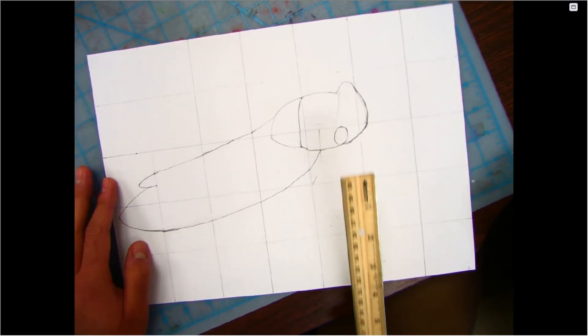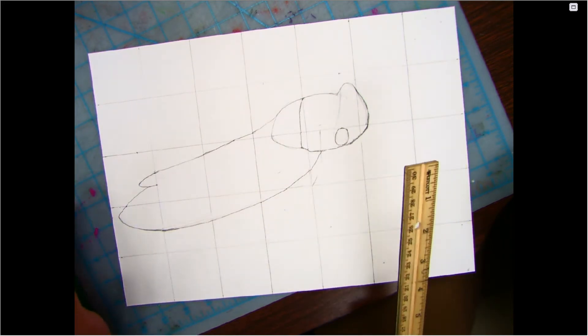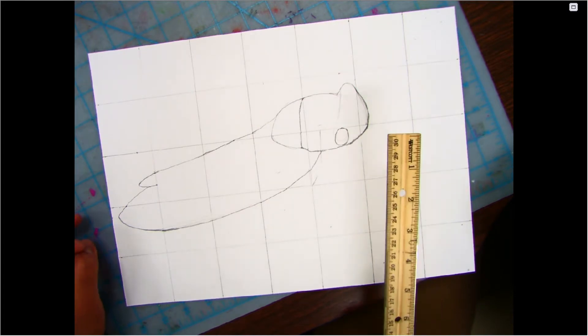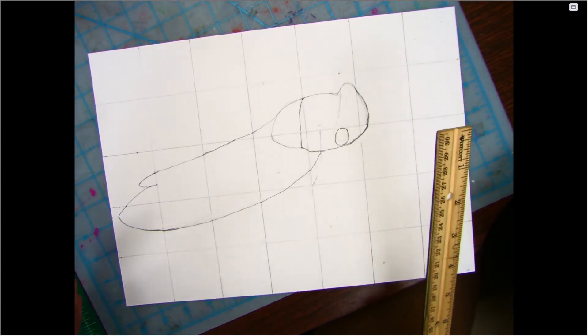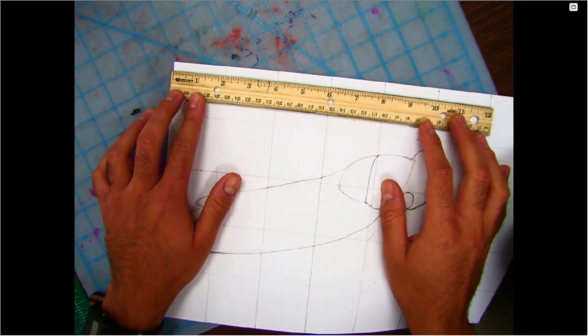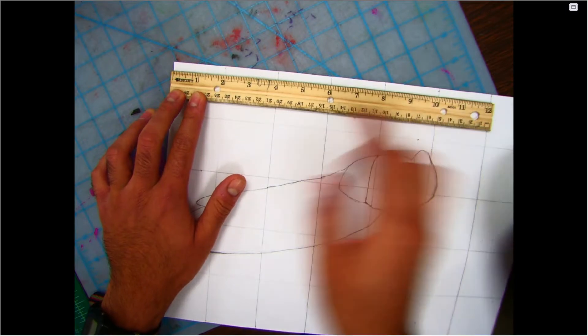The one that I provided for you is 10 by 14, so that's basically twice the size of the image that you had. Because remember, your printed out image should be five by seven. This one's 10 by 14, so that's twice the size. Essentially what we did, we did a two inch grid on this one. Get the ruler, line it up to the side.